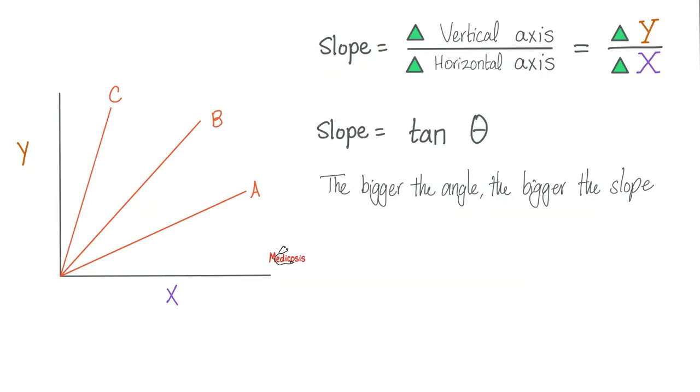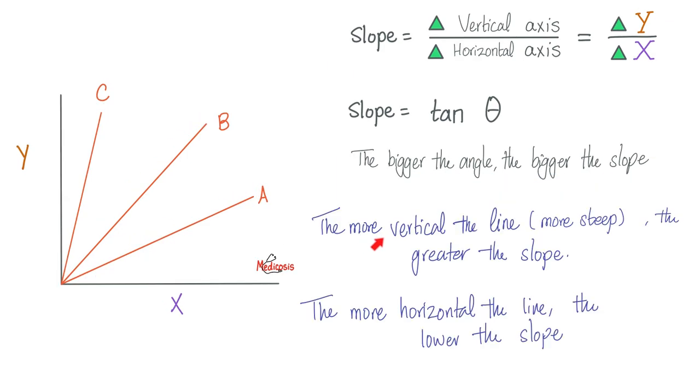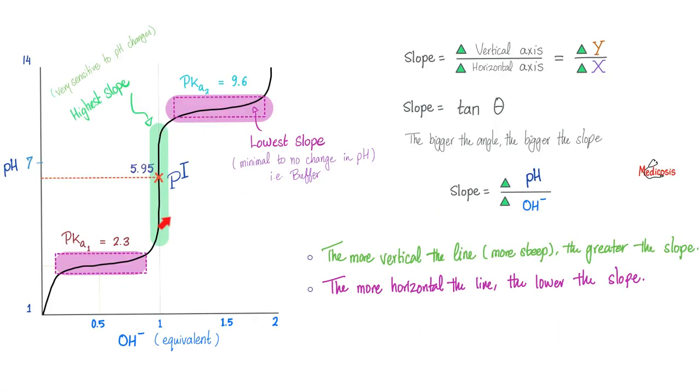Next, let's talk about the concept of the slope. A slope is the change in the vertical axis over the change in the horizontal axis. In this case, it's delta Y over delta X. Also, the slope equals tan theta. Theta is the angle between the x-axis and the y-axis. Which one has the greatest slope? Whoever has the greatest angle. The bigger the angle, the bigger the slope. We can say that the more vertical the line, the greater its slope. The more steep the line, the greater its slope. Conversely, the more horizontal the line, the lower the slope.